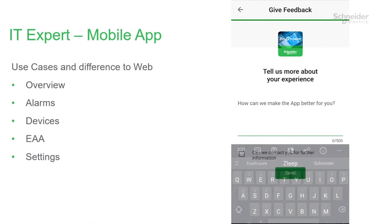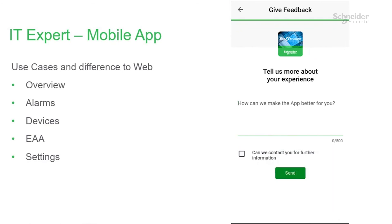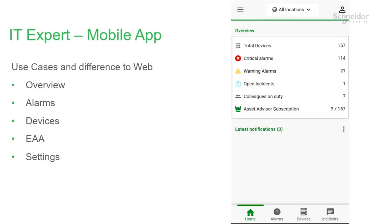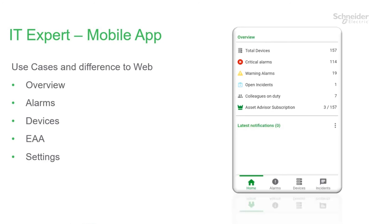There is a Feedback button that allows customers to write ideas and feedback on the app directly to Product Management. The ITExpert mobile app follows the permissions and rules settings of ITExpert — so if you're only allowed to see Europe, you can only see European devices in the app.